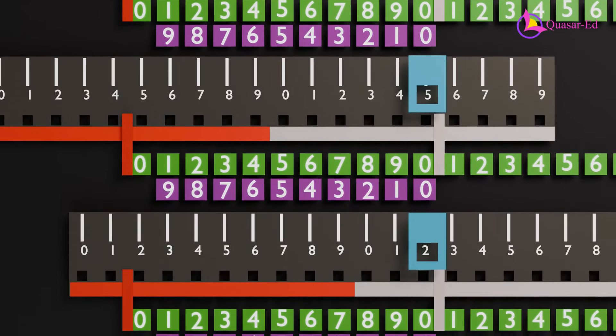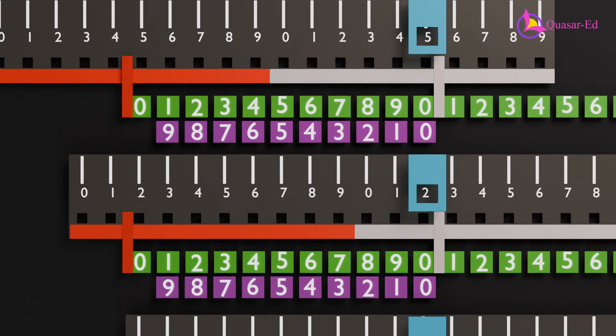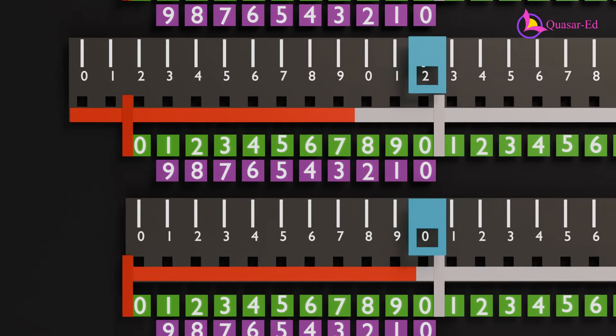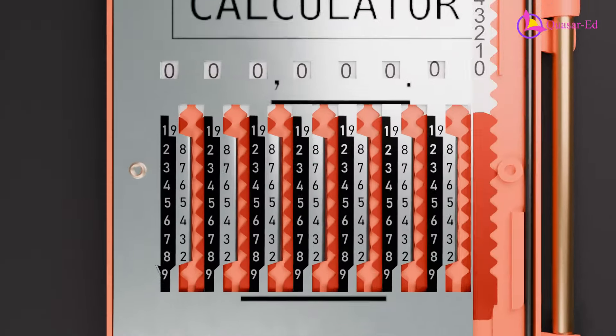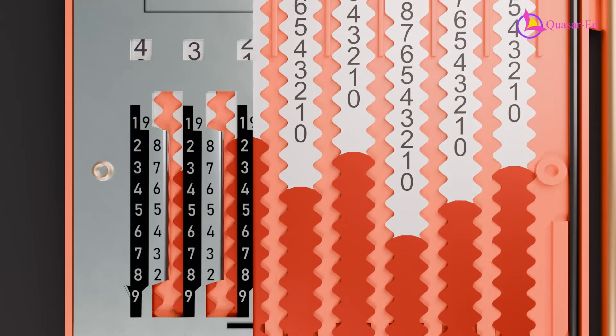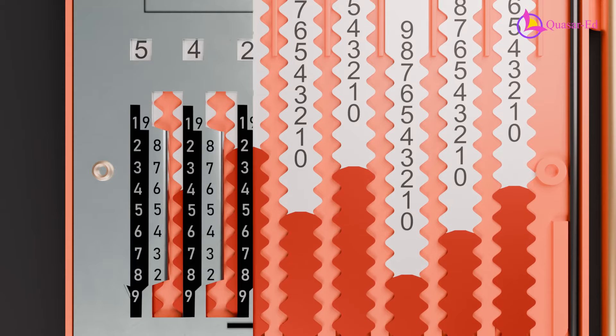Understanding how each number strip works allows us to chain them together to add or subtract any large numbers we want. The Magic Brain calculator uses vertical sliders so that the numbers are more readable from left to right.